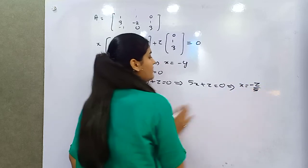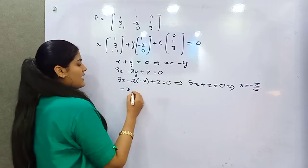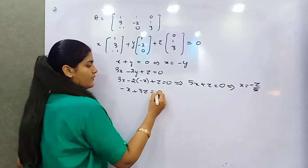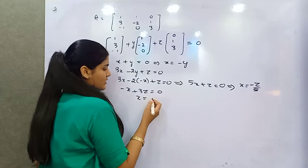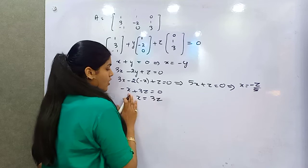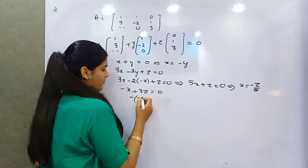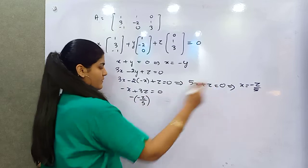Then after, your third equation minus X plus 0, that means X is equal to 3Z. Or you can put the value down here, so minus of minus Z by 5, which is your X.